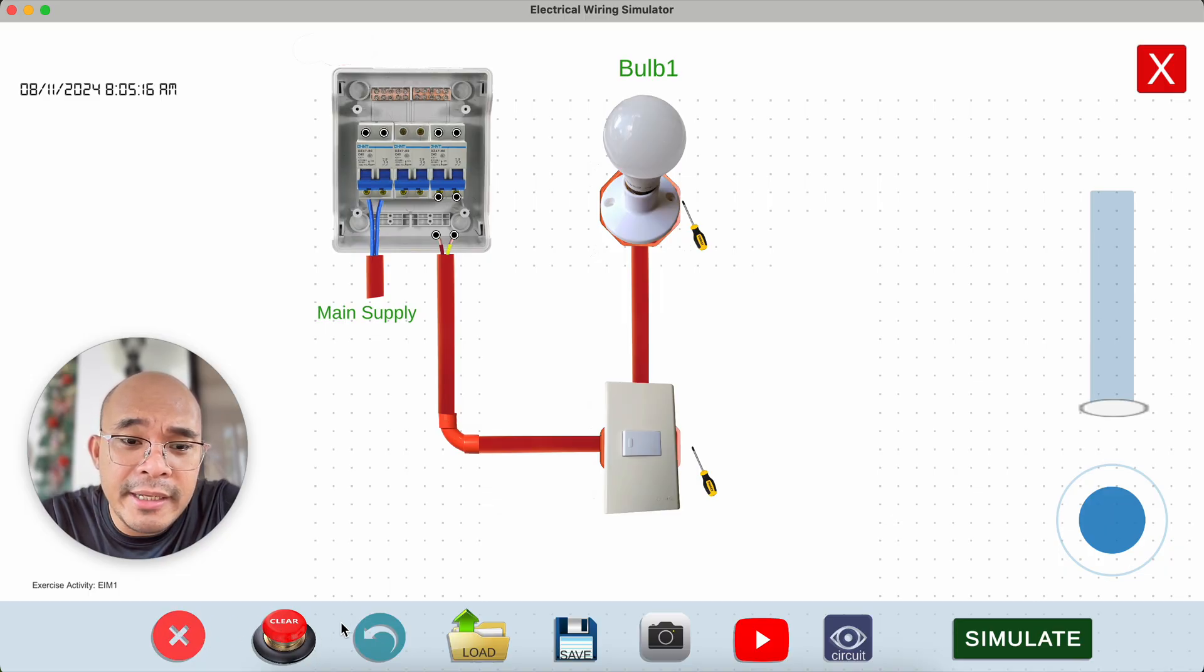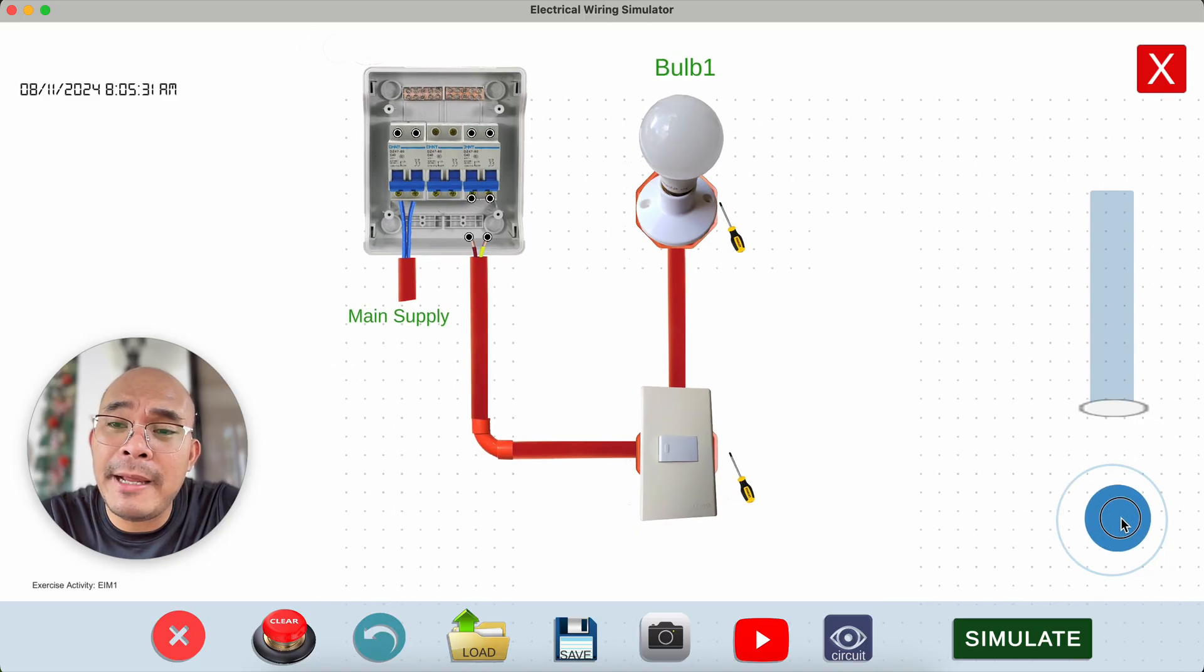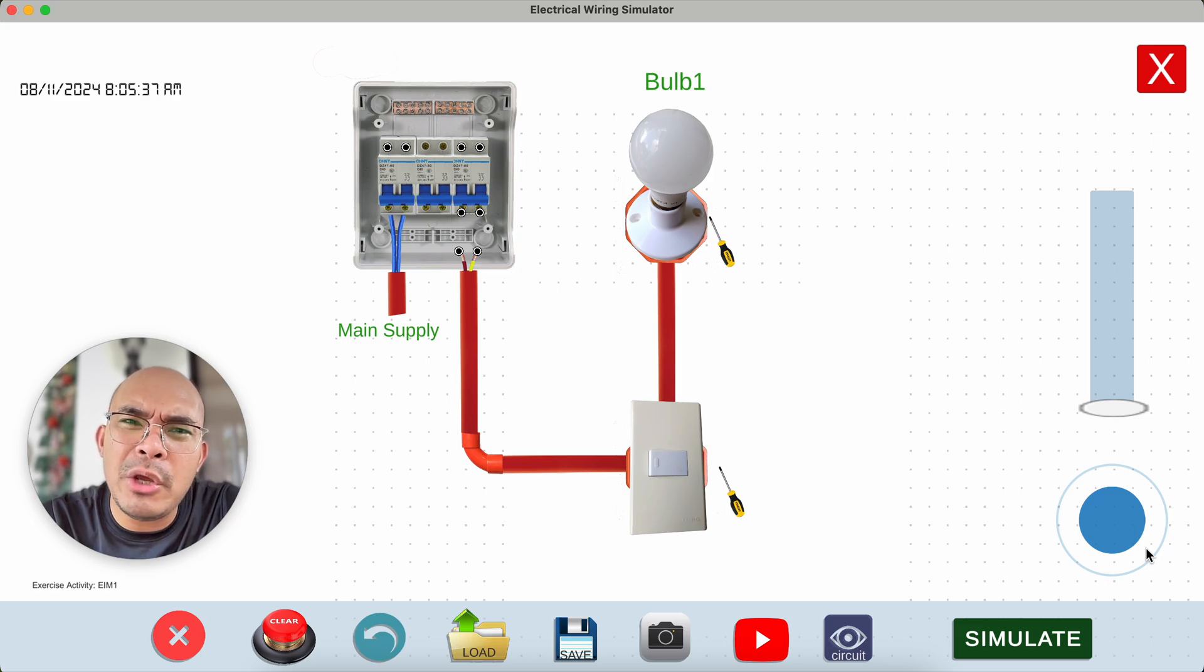We have here the clear, the undo, the load, the save, and then we also have this one, the camera, I will show later on. And then, of course, the tutorial on how to do it, and then showing the circuit. This is the zoom, and then this is the panning. Last time, we incorporated the touch, but there were some issues with other mobile devices, so that is why we go back to the old school. But if we can already solve the problem with the development team, we will try to update that one. But as of the moment, the safest solution that we can have is this one, the scrolling, and then the panning tool.